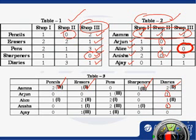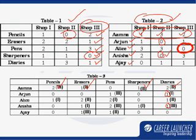Since Anisha has bought one eraser and one sharpener from Shop 3, Anisha bought one diary from Shop 3 and Arjun bought one diary from Shop 3. That completes our table. The questions given in the paper can now be easily dealt with.